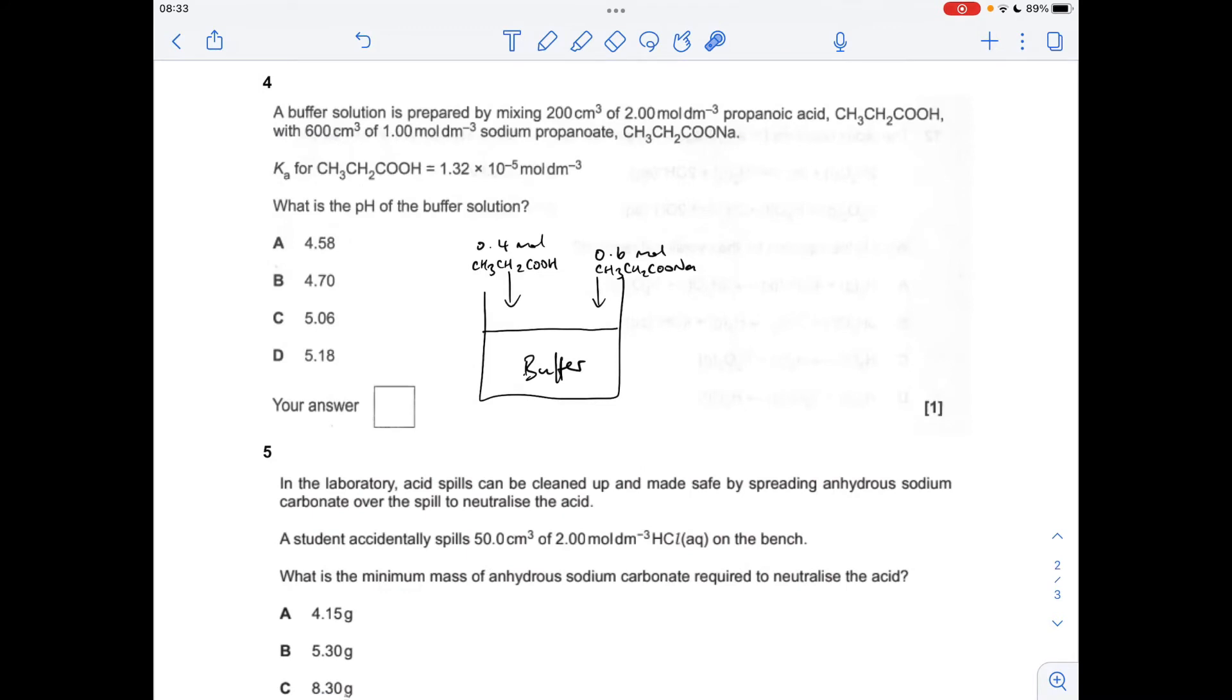Number four is all about calculating the pH of a buffer solution. They've added the weak acid and the salt of the weak acid into the same beaker, generating a buffer. I've worked out the moles of each, just concentration times volume. Then we bring in our Henderson-Hasselbalch expression to calculate the H+ concentration. You'll notice I've put the mole values in there. Because it's all in the same volume, you don't need to calculate the concentration, since the mole ratio is the same as the concentration ratio. We get 5.06 as your answer, which means it's option C.